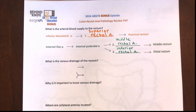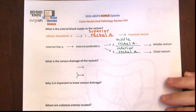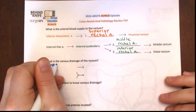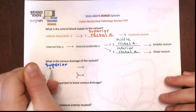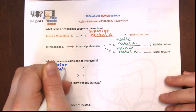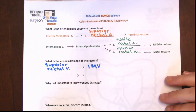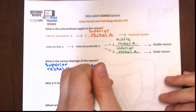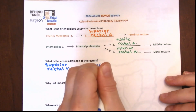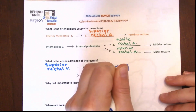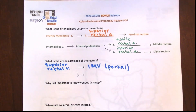For the venous drainage of the rectum, in the superior areas, the superior rectal vein drains into the IMV, which then drains into the portal circulation. For the middle and inferior areas, those rectal veins drain into the internal iliac vein and then into the systemic circulation.